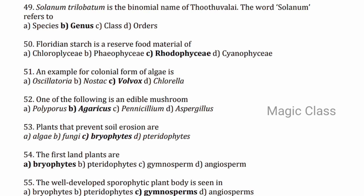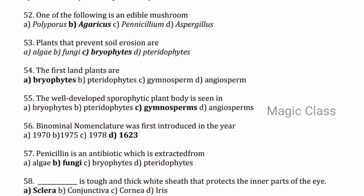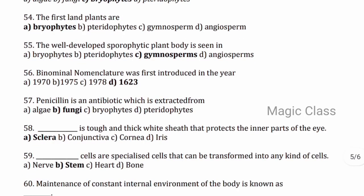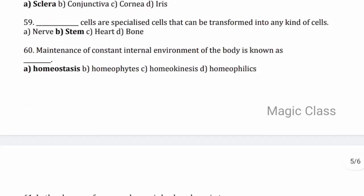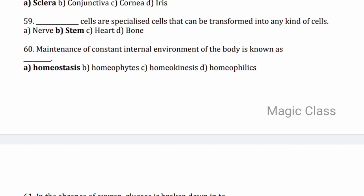Question 52 — one of the following is an edible mushroom: Agaricus. Question 53 — plants that prevent soil erosion are bryophytes. Question 54 — the first land plants are bryophytes. Question 55 — the well-developed sporophytic plant body is seen in gymnosperms. Question 56 — binomial nomenclature was first introduced in the year 1623. Question 57 — penicillin is an antibiotic extracted from fungi. Question 58 — the tough and thick white sheet that protects the inner part of the eye is the sclera. Question 59 — stem cells are specialised cells that can be transformed into any kind of cell.